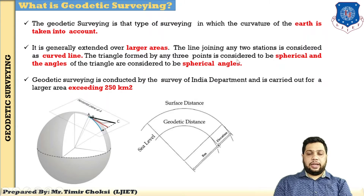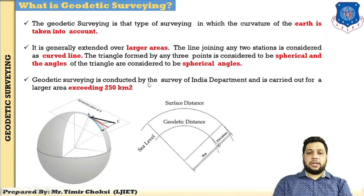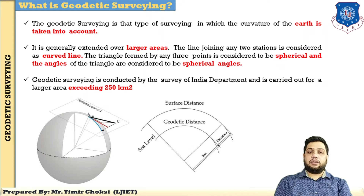The triangle formed by any three points is considered to be spherical — called a spherical triangle — and the angles of the triangle are considered to be spherical angles. Geodetic survey is conducted by the Survey of India department and is carried out for a larger area exceeding 250 square kilometres.